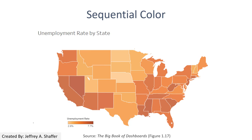Here is an example using sequential color. We use orange — just one single hue — but we change the brightness of the color to represent the unemployment rate. We don't want to emphasize any specific range of the data, so we just use a sequential schema.